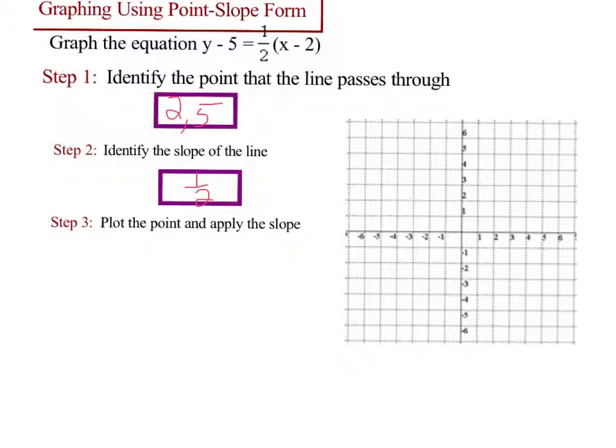So we plot this point: over 2, up 5. So over 2, up 5. So there's my (2, 5). And now I apply my slope: up 1, over 2. So I will do that. Up 1, over 2. Up 1, over 2. And here is my line. Put arrows on the end. You're done.